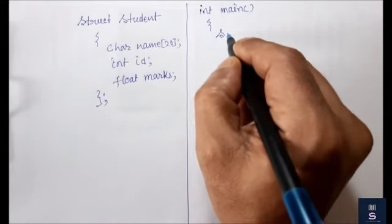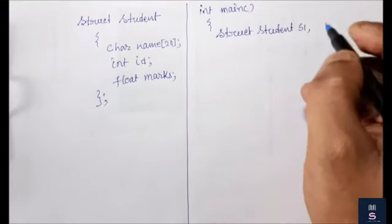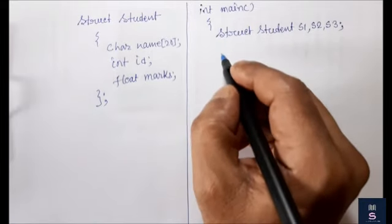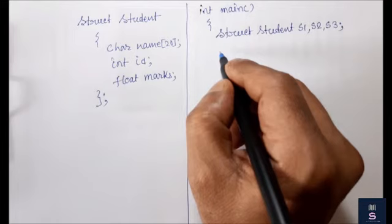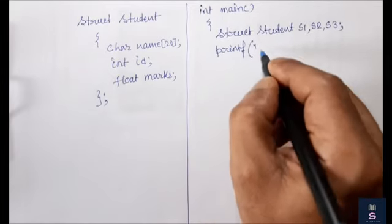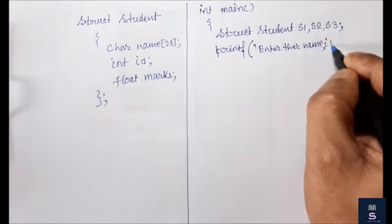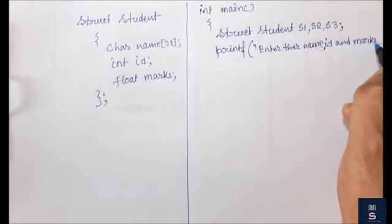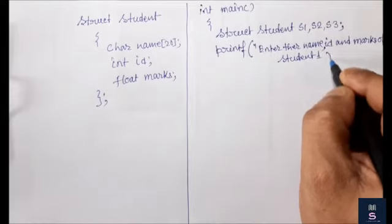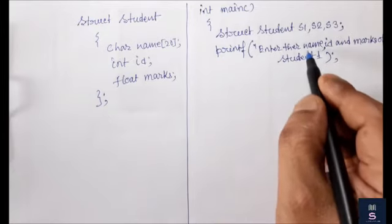I will write struct student s1, s2, s3 — just taking three as an example. Now what I have to do? I have to give a message to the user to enter their id, name, and marks. So printf enter the name, id, and marks of student 1. We are doing a simple program so that you can understand it very well. We have to enter three values: name, id, and marks.